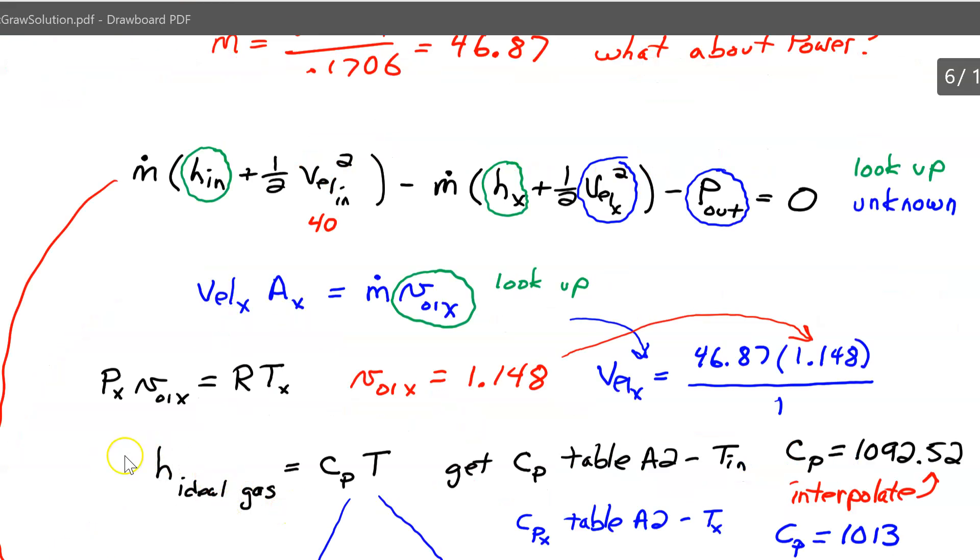Okay, what I did, since it's an ideal gas, there's a formula for the enthalpy of an ideal gas. It's equal to c_p. This is the heat capacity, the constant pressure heat capacity times the temperature. Again, this is going to be in absolute values.